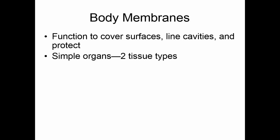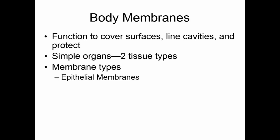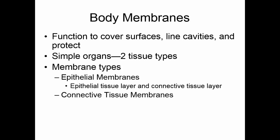There are two basic membrane types. Epithelial membranes are true organs — they have two different tissue types: an epithelial tissue layer and a connective tissue layer. Connective tissue membranes are made only of connective tissue, but there are two different types of connective tissue within them.